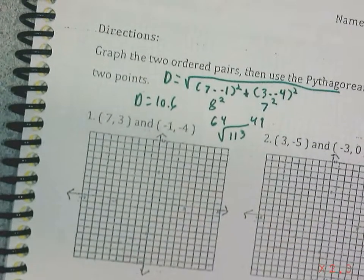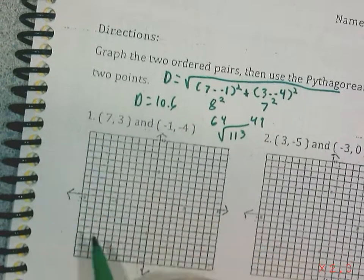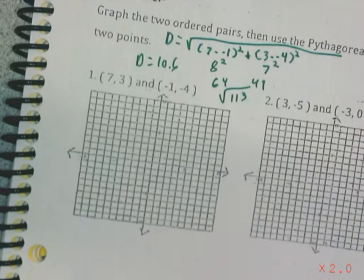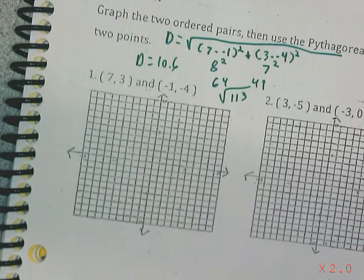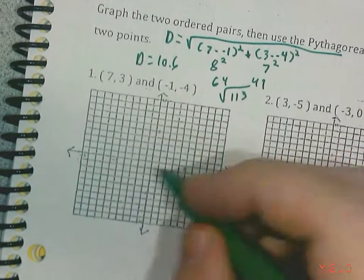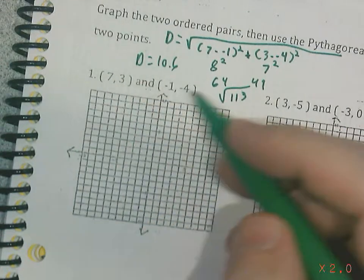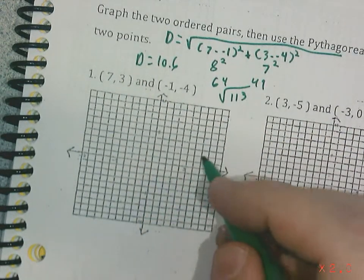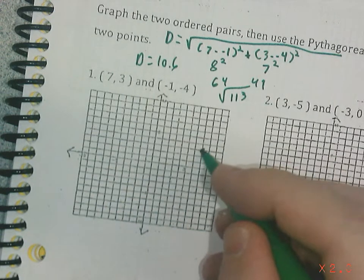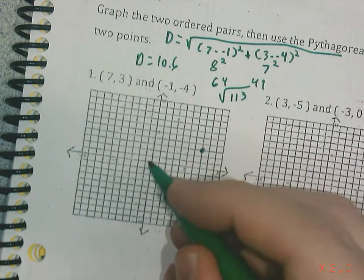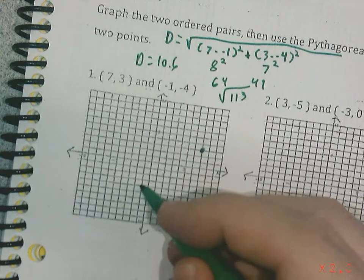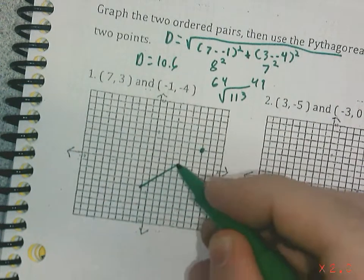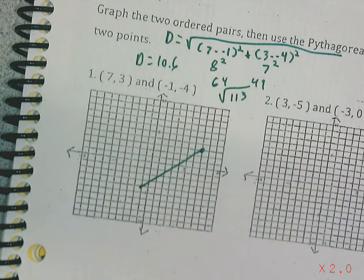Now that's how you use the distance formula. But on this page, I actually have the graphs. So let me show you how to use the graphs to do kind of the same thing. First thing we're going to do is plot our points. So seven, three. So right seven, up three, there's one point, and then negative one, negative four. There's my other point. So I'm trying to find the distance of this line, basically.